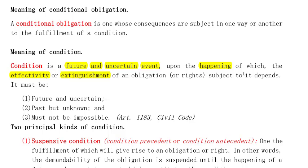The happening of a condition either causes the obligation to become effective, or it extinguishes the obligation or rights which are subject to it. Therefore, as a requirement, a condition should be something future and uncertain, or a past event unknown to the parties, and must be possible. If the event is not uncertain and will necessarily happen, it cannot be treated as a condition — it may instead be considered an obligation with a period or with a term, which we will discuss later.